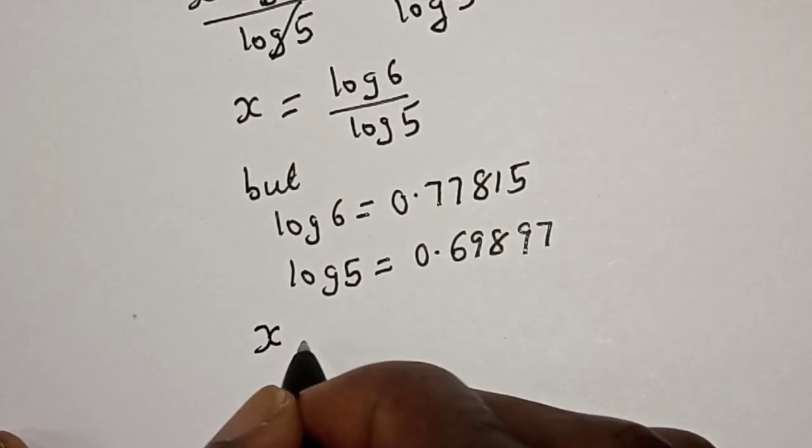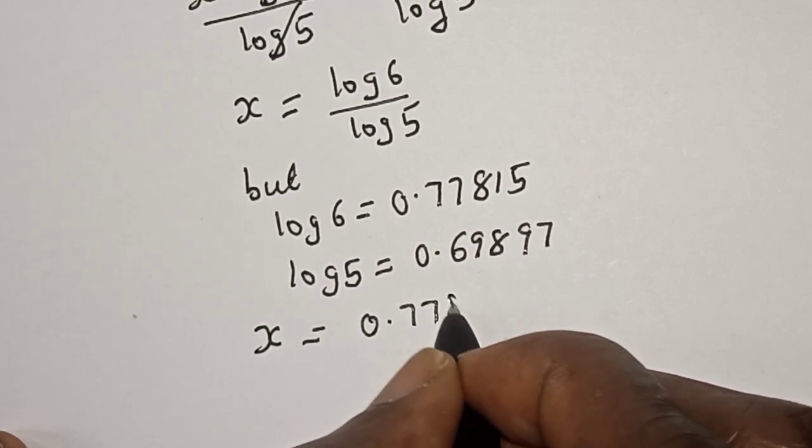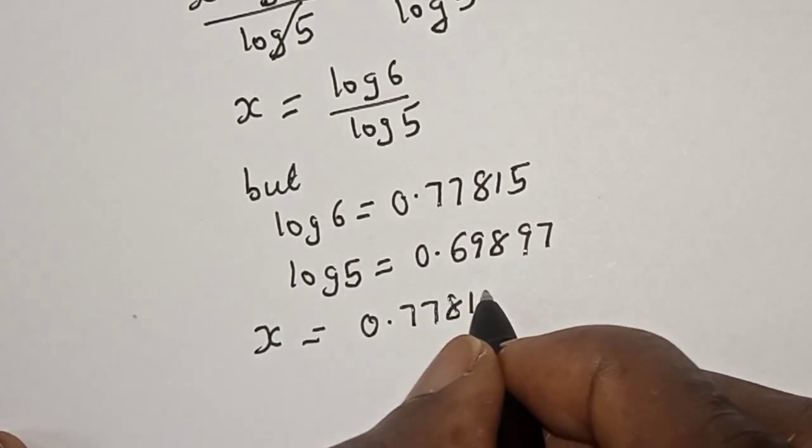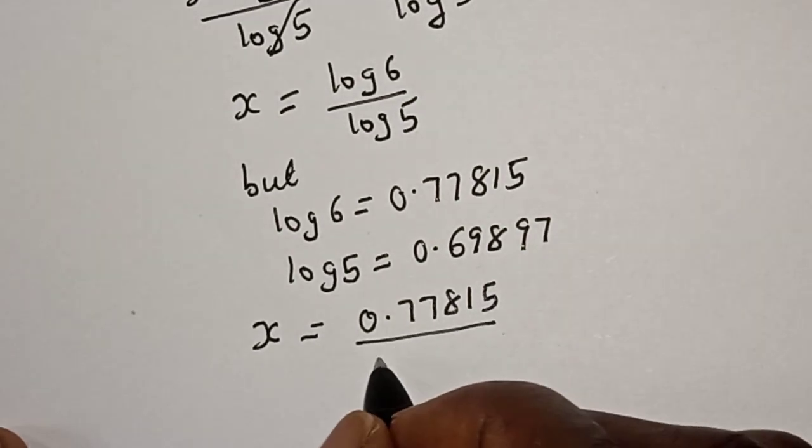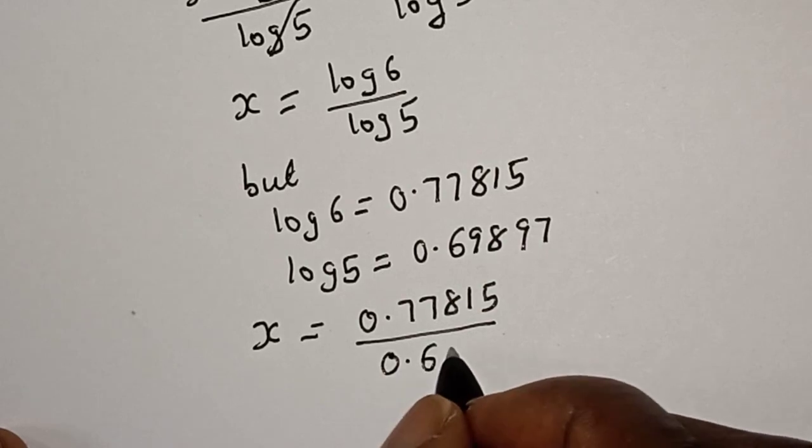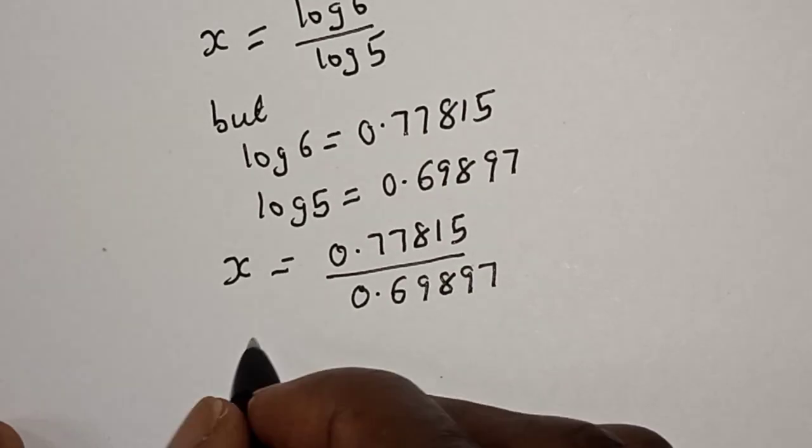s is equal to 0.77815 divided by 0.69897. And if you divide this very well,